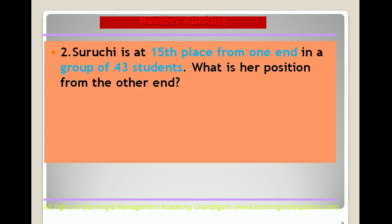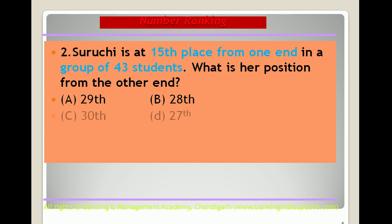Practice question: a student is at the 15th place from one end in a group of 43 students. What is her position from the other end? The options are 29th, 28th, 30th, and 27th. Try to solve it quickly.